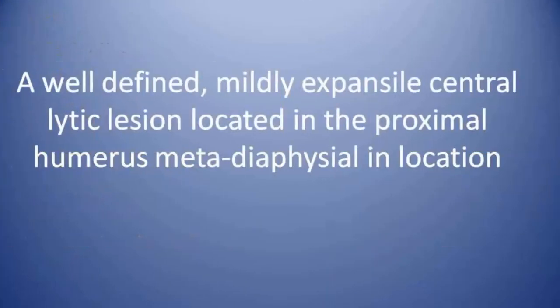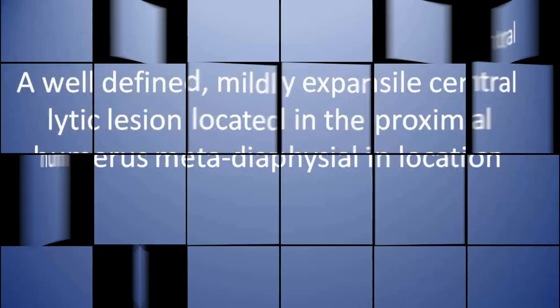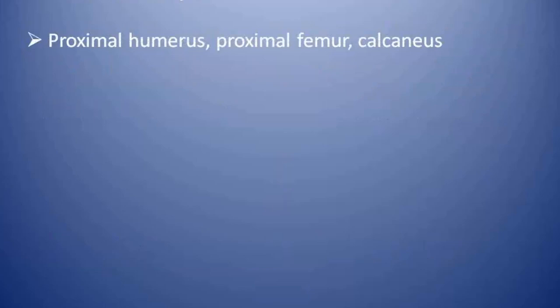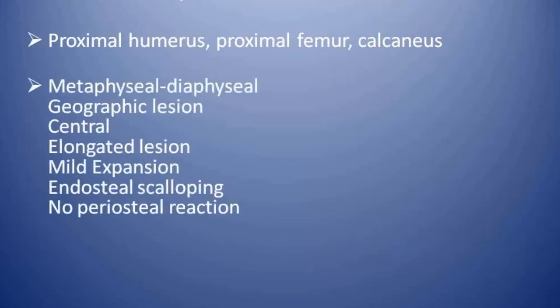This is a case of a well-defined, mildly expansile, central lytic lesion located in the proximal humerus metadiaphyseal in location — this is a case of a simple bone cyst, also known as the unicameral bone cyst. Simple bone cyst is not a true neoplasm. The most common sites include proximal humerus, proximal femur, and calcaneus. Lesions are predominantly metadiaphyseal in location with geographic pattern of bone destruction, central elongated appearance, mild expansion, endosteal scalloping, and no obvious periosteal reaction.